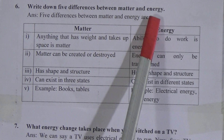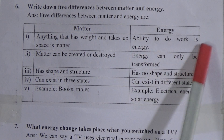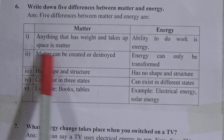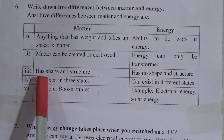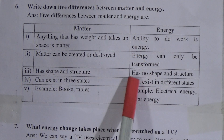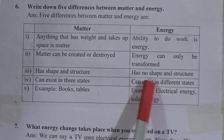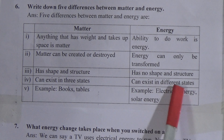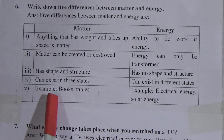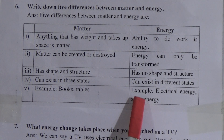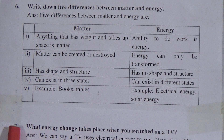Question number 6: Write down five differences between matter and energy. The five differences are: Anything that has weight and takes up space is matter; ability to do work is energy. Matter can be created or destroyed; energy can only be transformed. Matter has shape and structure; energy has no shape and structure. Matter can exist in three states; energy can exist in different states.